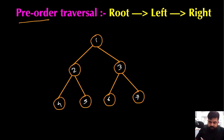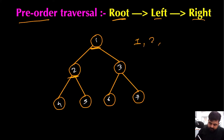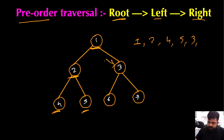For pre-order traversal, we follow the principle of root, left, right. First we visit the root node 1, then go left to node 2, then further left to node 4, then right to node 5. After that we come back and visit root node 3, then go left and then right. That is the strategy for pre-order traversal.